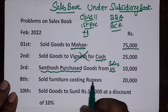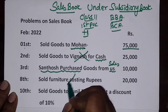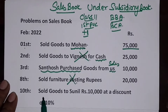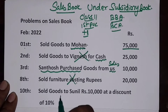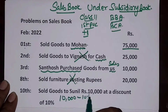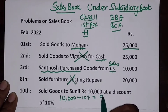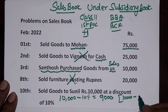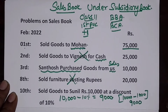Next entry: sold furniture costing ₹20,000 — that won't appear in the sales book because it will go to the journal proper. Last entry: sold goods to Sunil ₹10,000 at a discount of 10%. That means the goods were sold for ₹9,000 — that is, ₹10,000 minus 10% (₹1,000) equals ₹9,000.